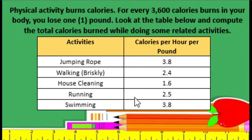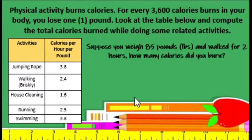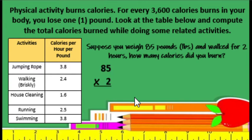Physical activity burns calories. For every 3,600 calories burned in your body, you lose 1 pound. Look at the table below and compute the total calories burned while doing some related activities. Suppose you weigh 85 pounds and walk for 2 hours. How many calories did you burn? So first step, we are going to multiply 85 pounds by 2 hours. So that is 85 times 2.